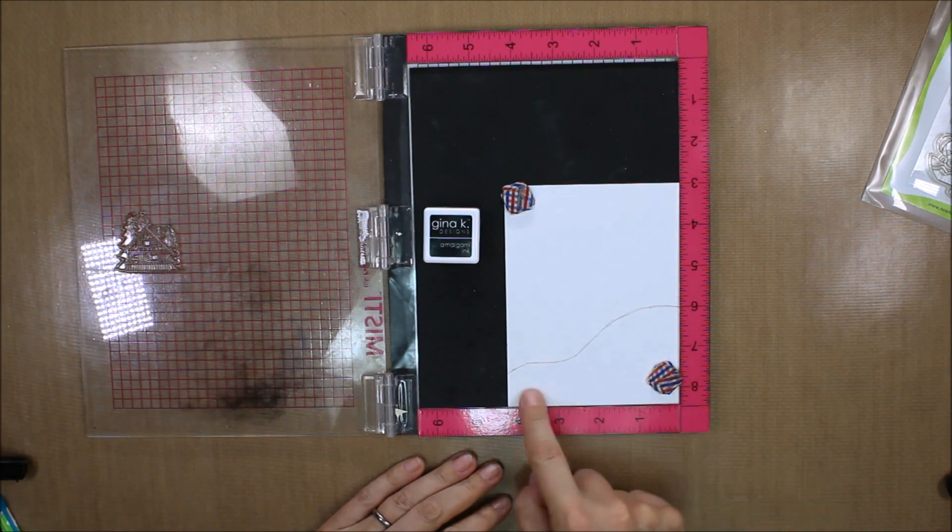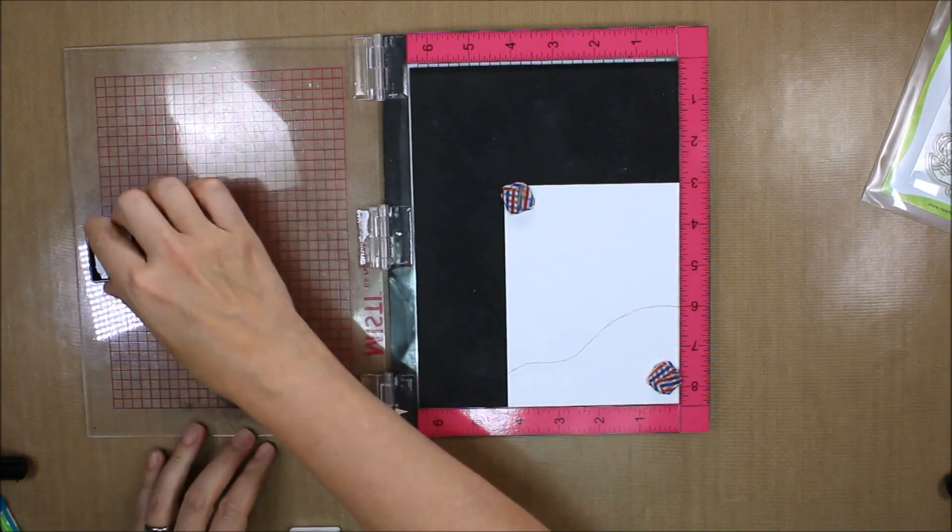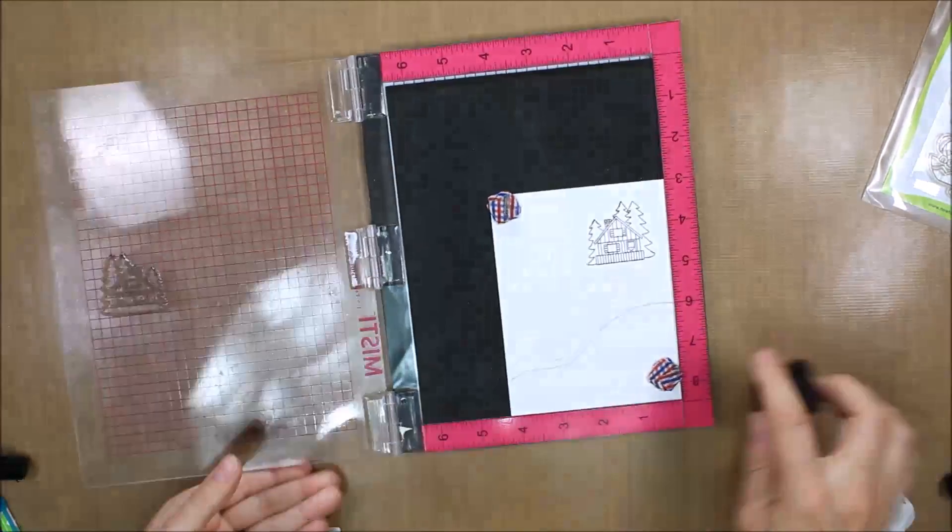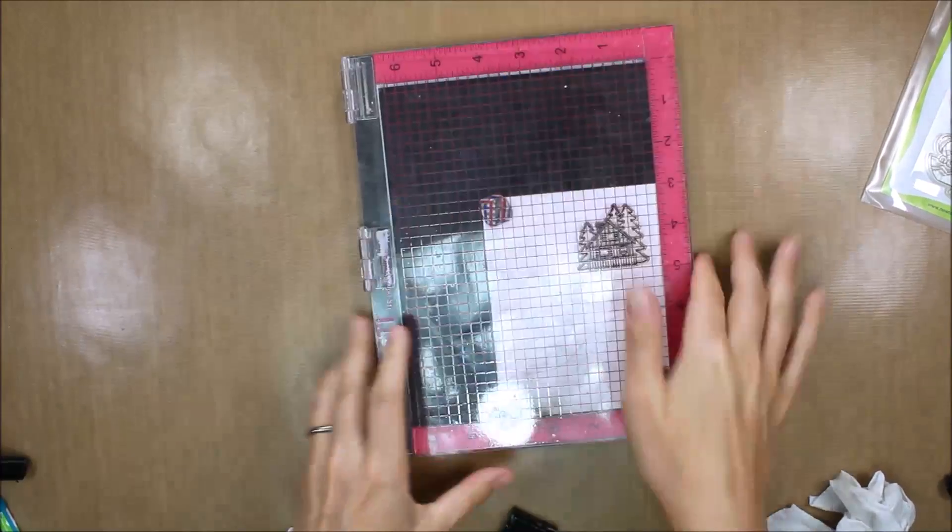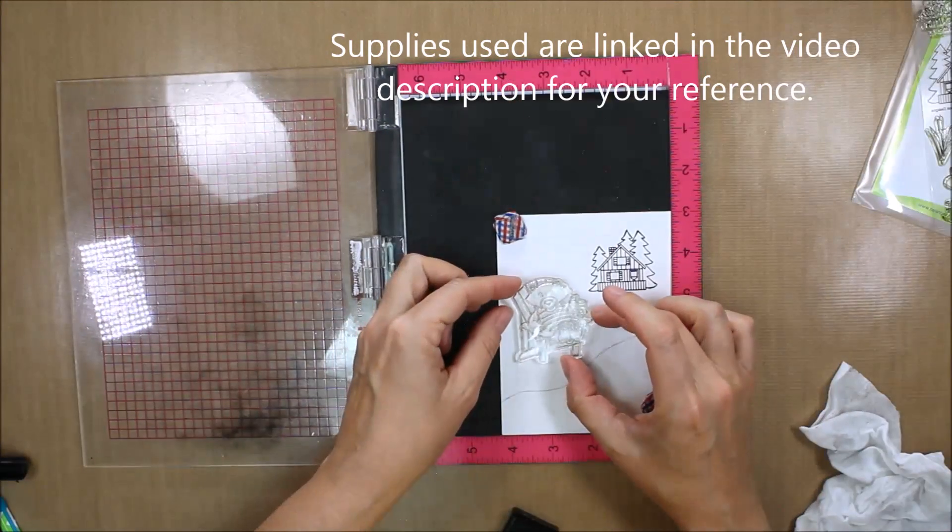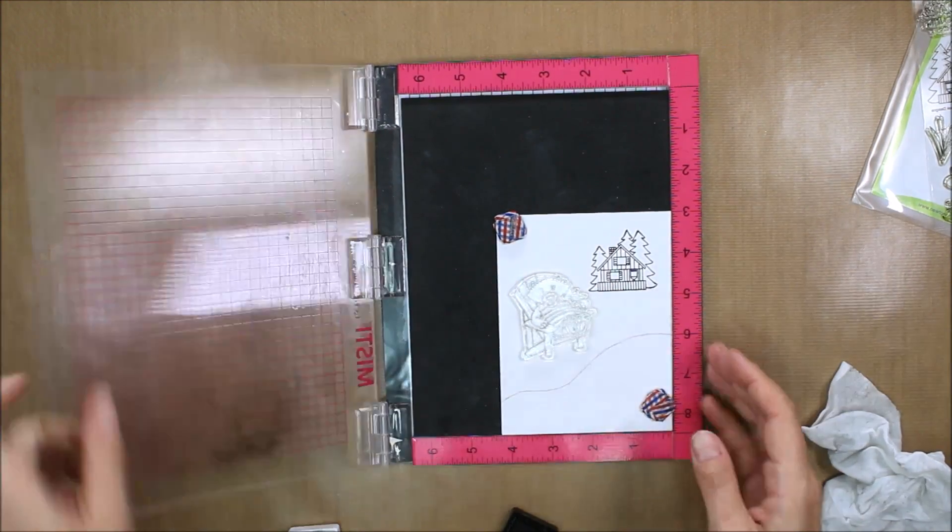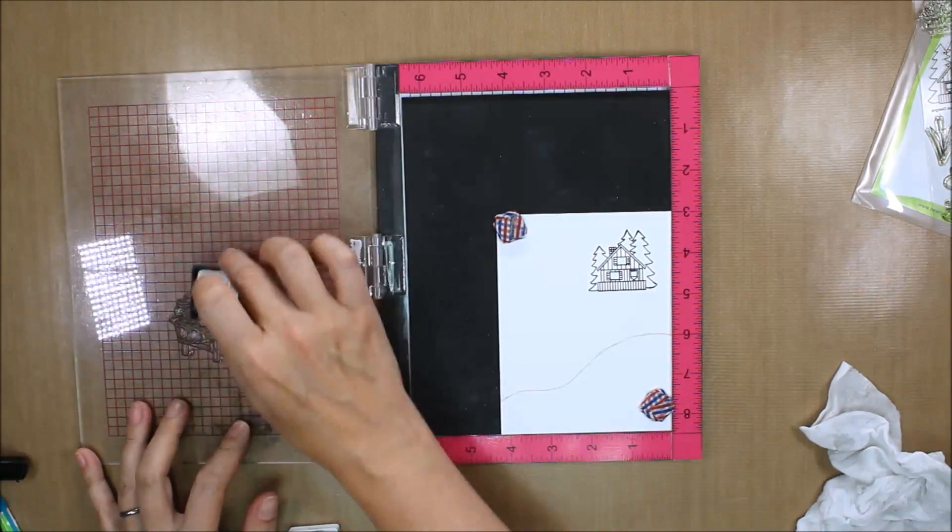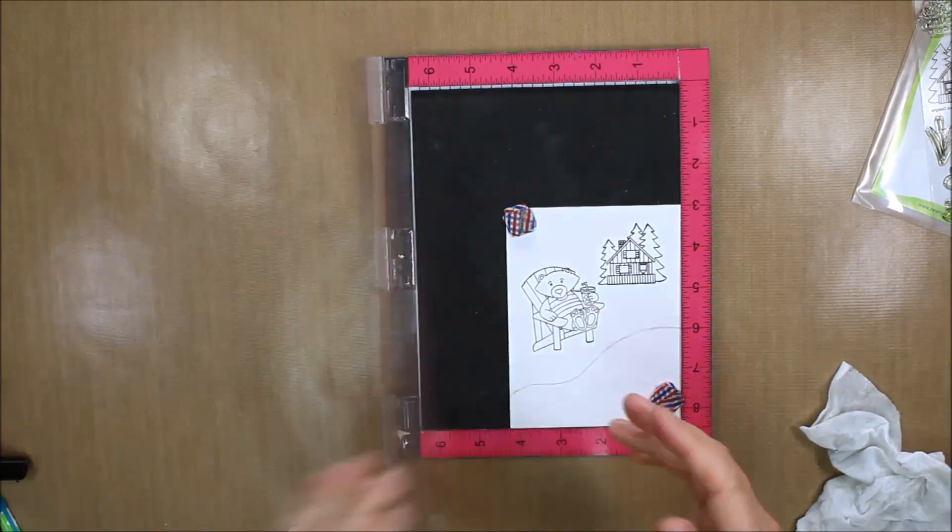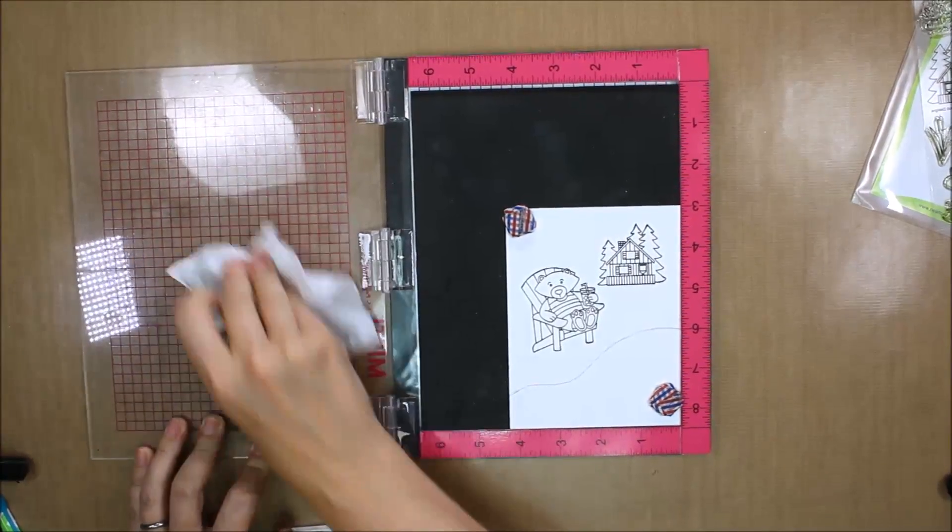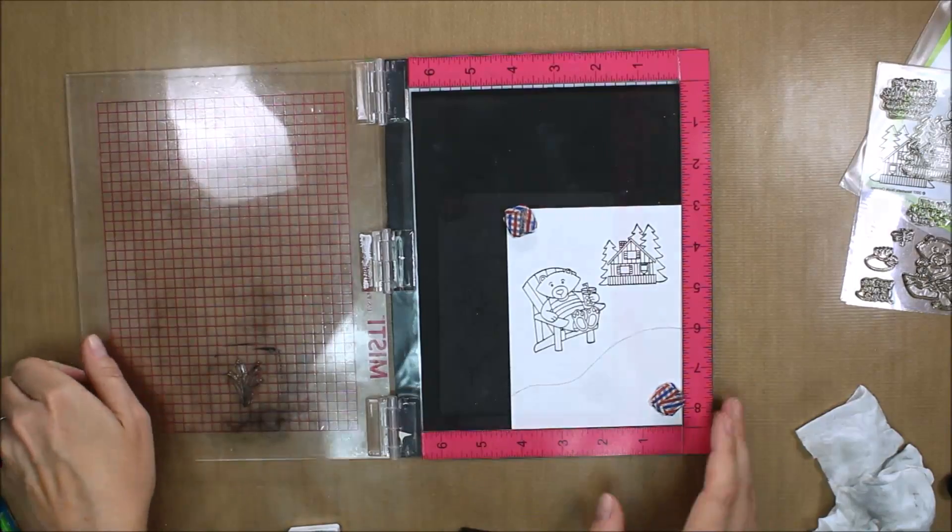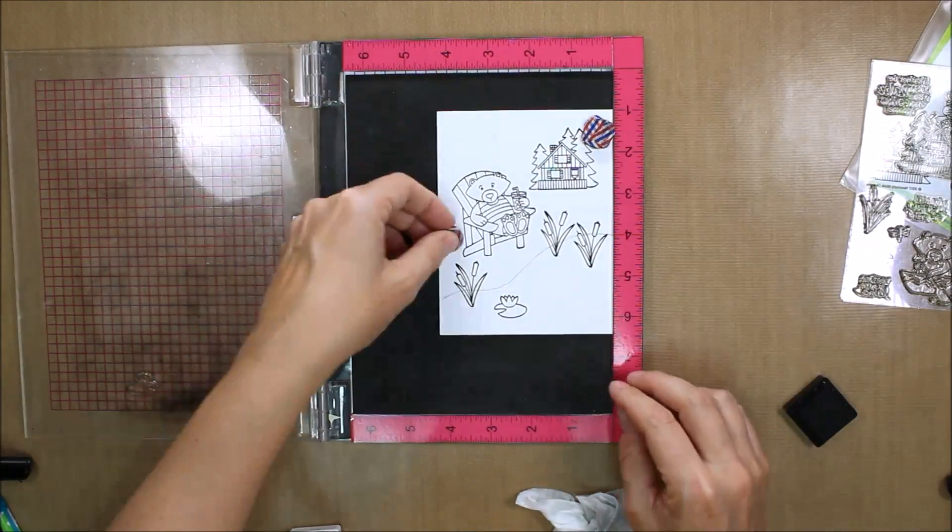I'm starting with an A2 sized piece of Gina K Designs Artist's Choice white cardstock. I'm stamping from the Newton's Nook Winston's Lake House stamp set in Gina K Amalgam ink which is both alcohol marker friendly and watercolor friendly. I've stamped the house in the upper right and drawn a lakeshore with a pencil line across the lower third, and now I'm stamping Winston in the middle left.